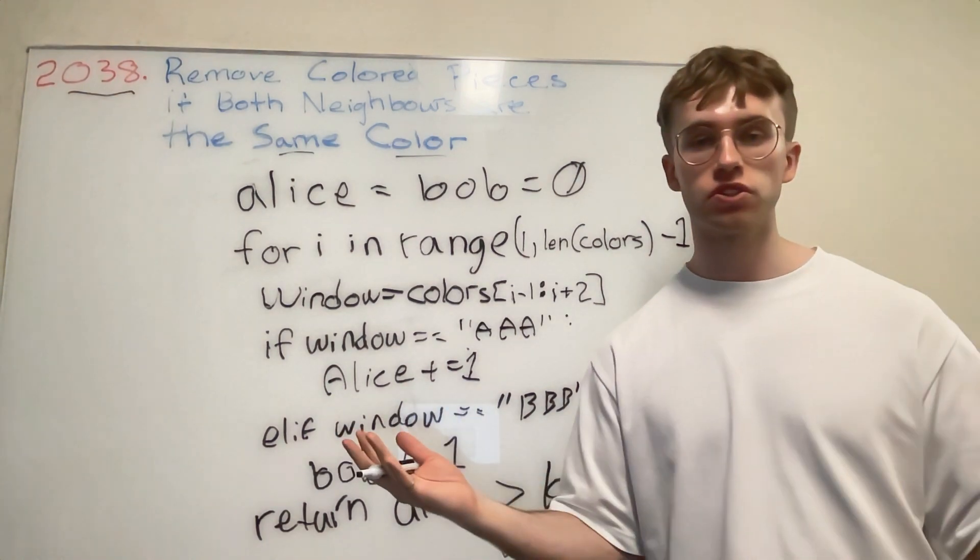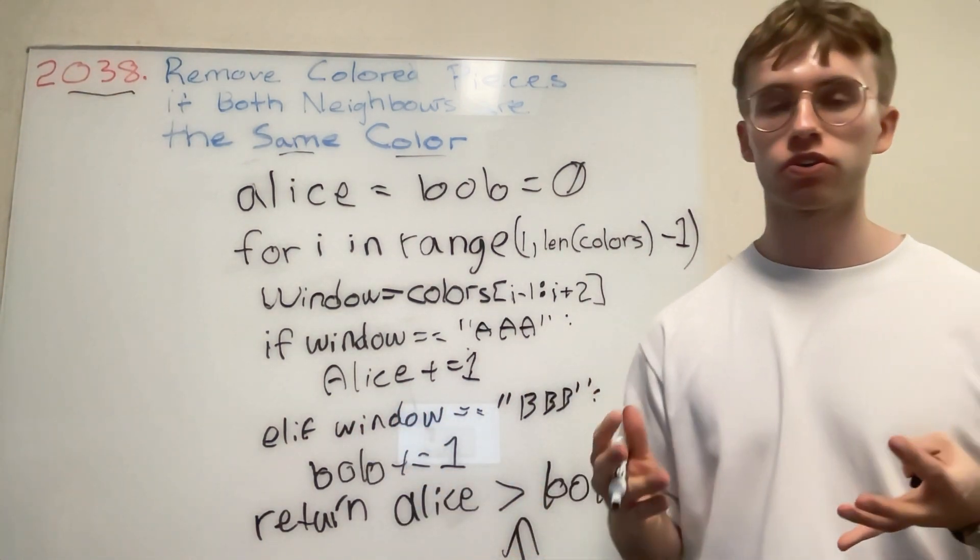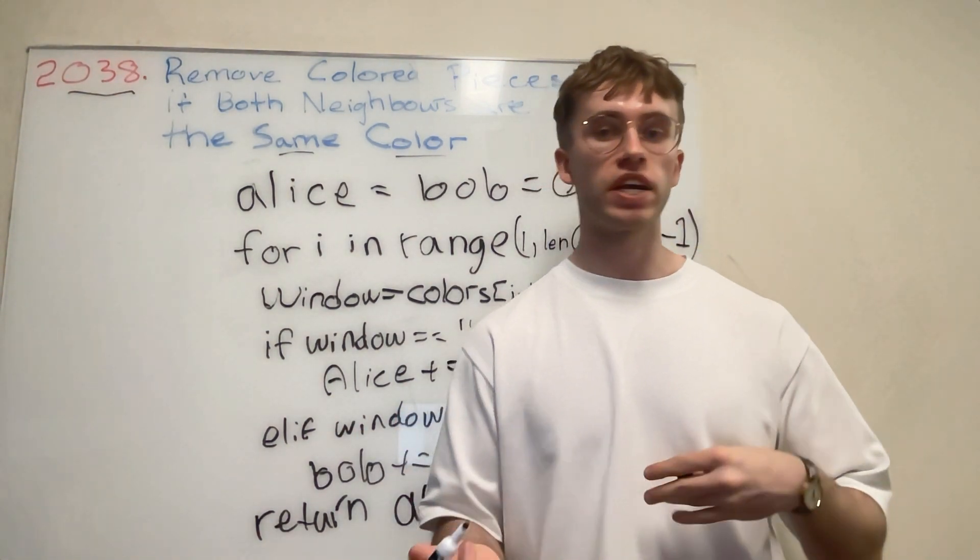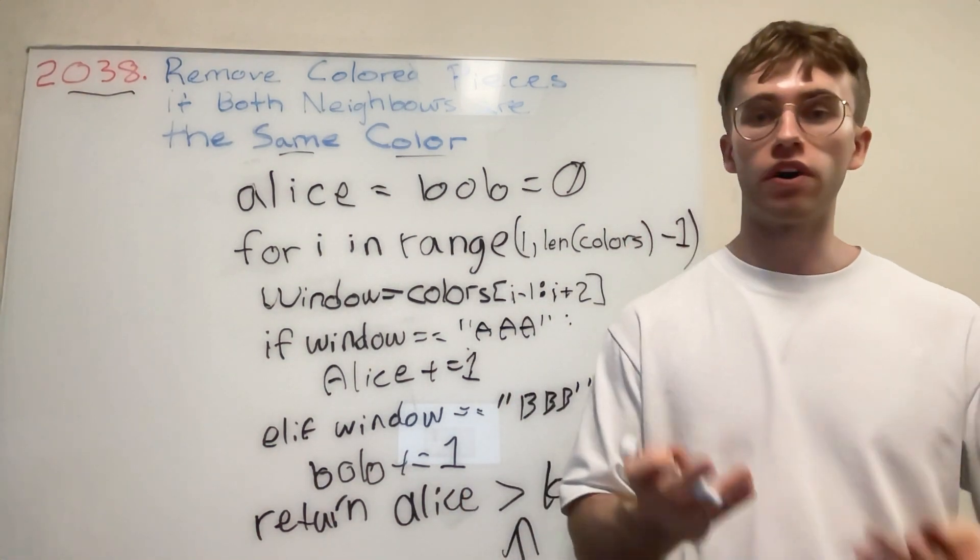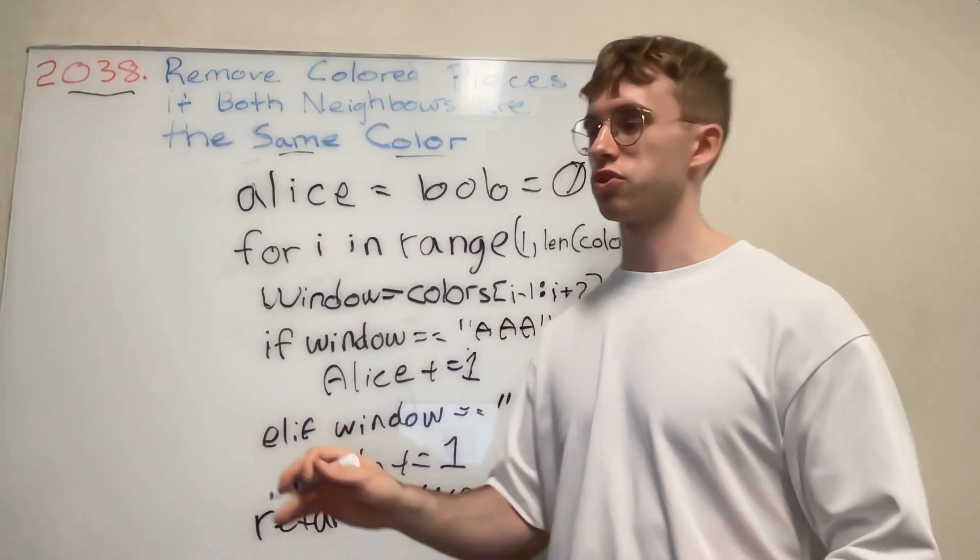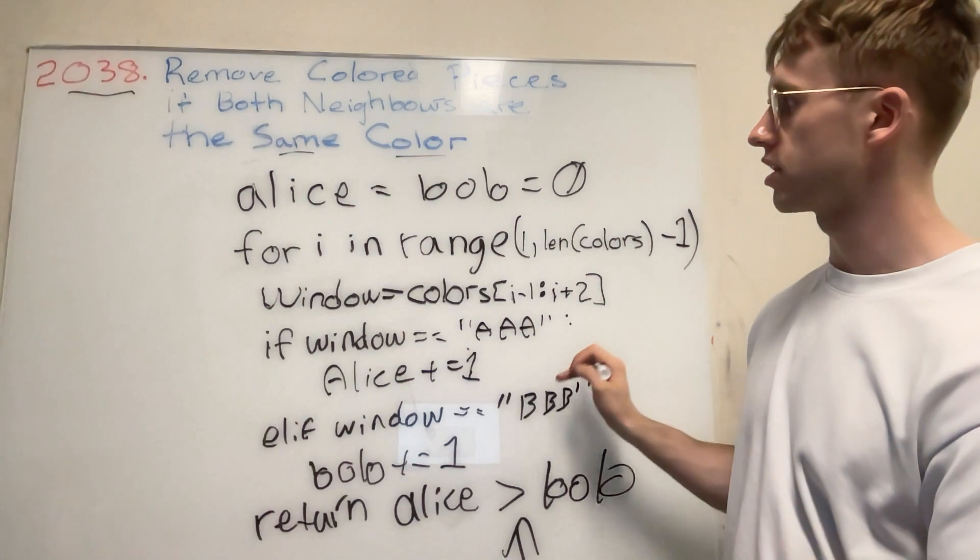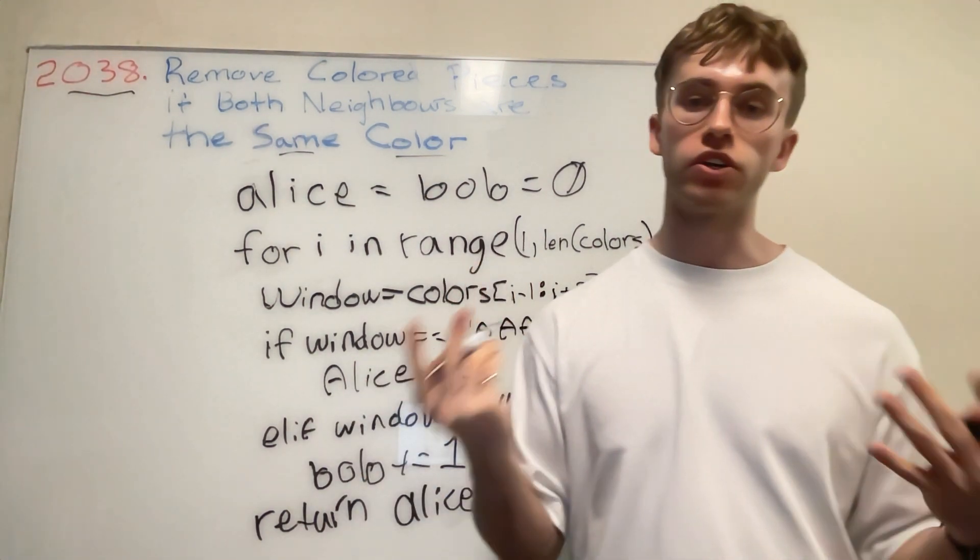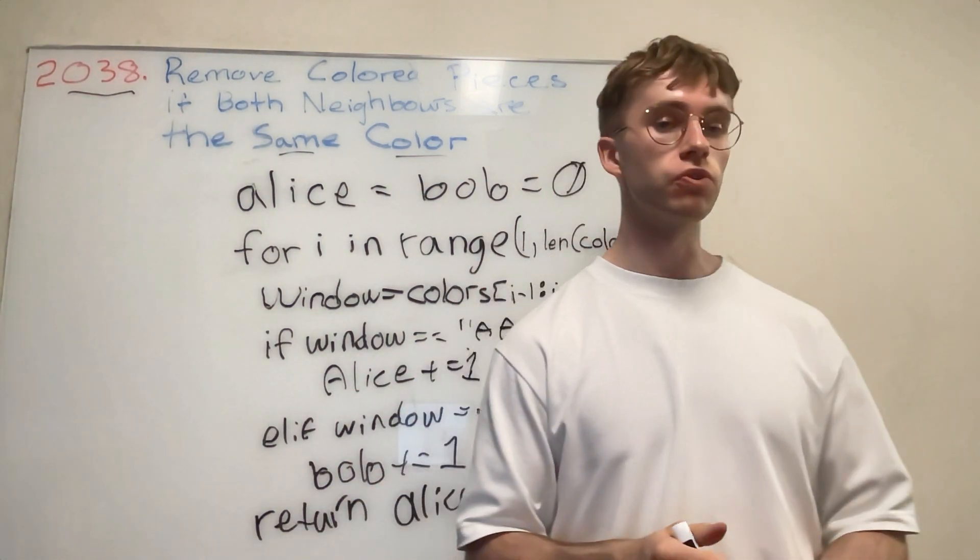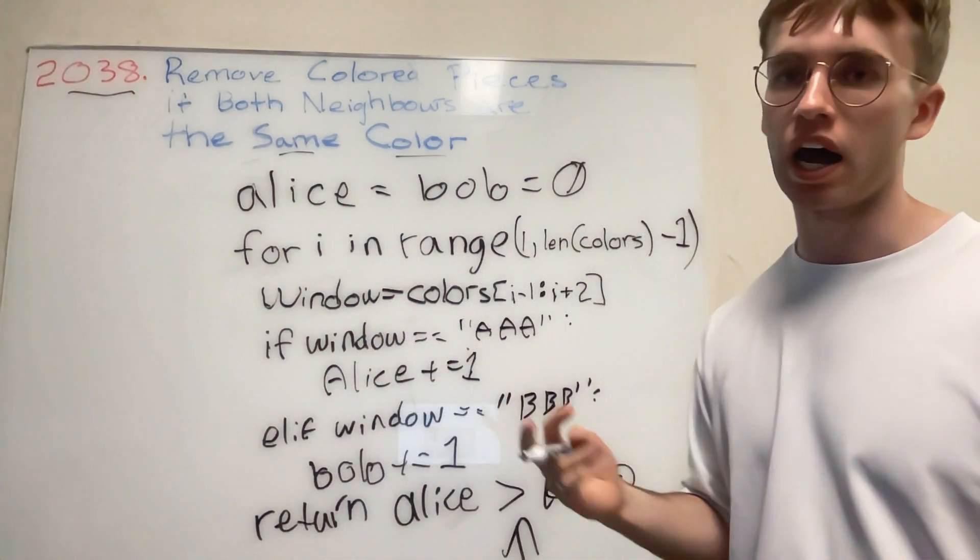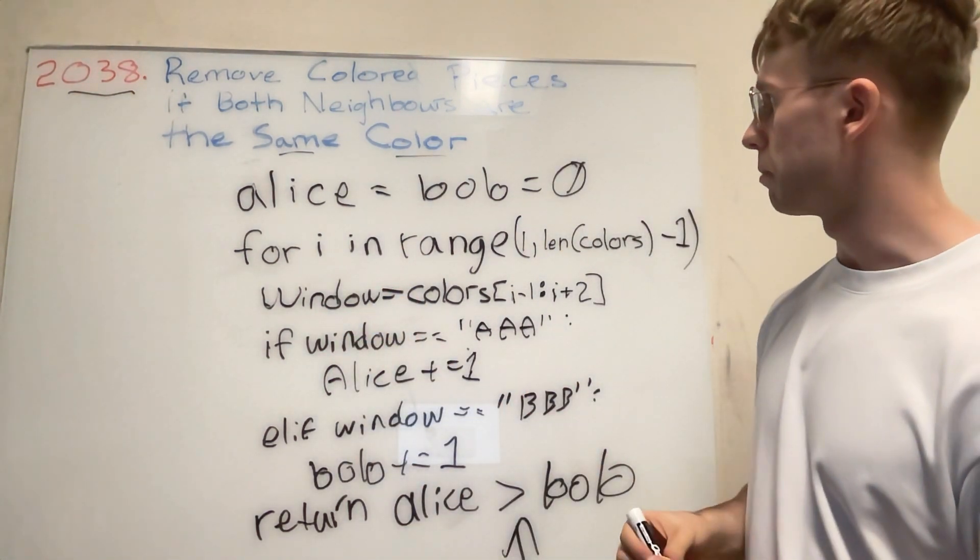All right, so that's the solution, that's the whiteboarding walkthrough. I think the main catch here is that you can't solve it in a brute force way, or at least I wasn't able to. You can't just go through the entire game itself. You have to come up with what's called a greedy solution, or use the greedy pattern, so that you're able to do this without the time limit exceeded.